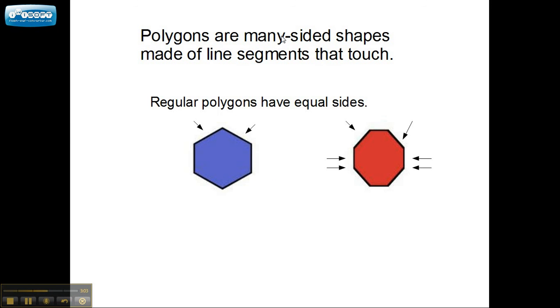Polygons are many-sided shapes made of line segments that touch. Regular polygons have equal sides. So, if it's a regular polygon, then the sides will be equal. These two are equal, and these two are equal. And those two are equal down there, too.